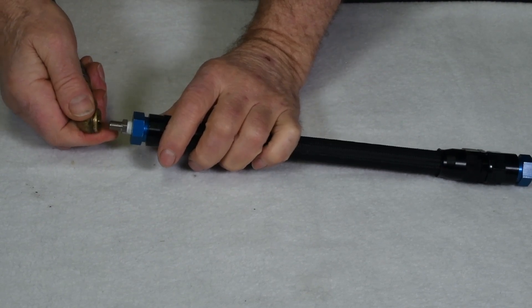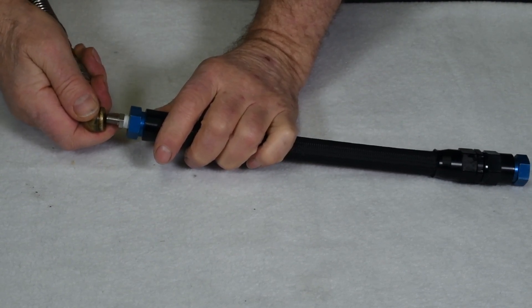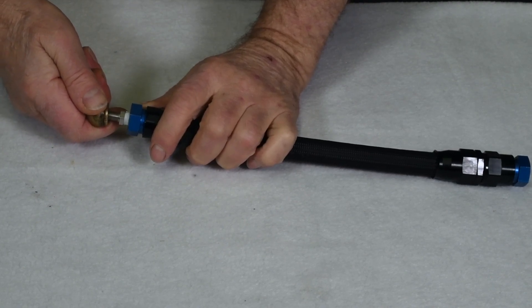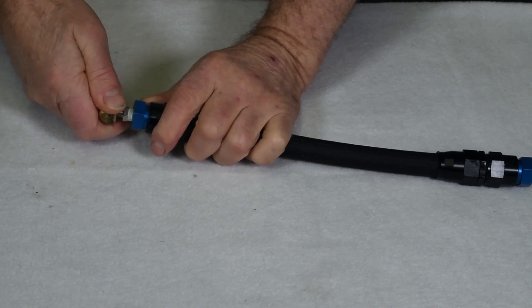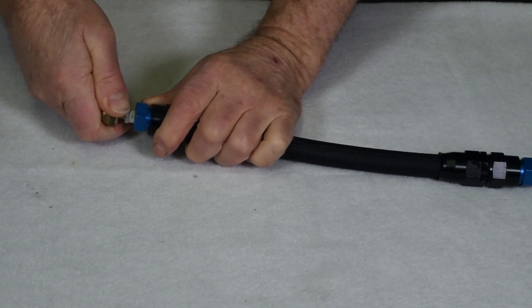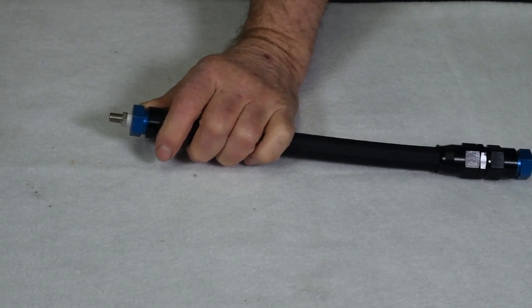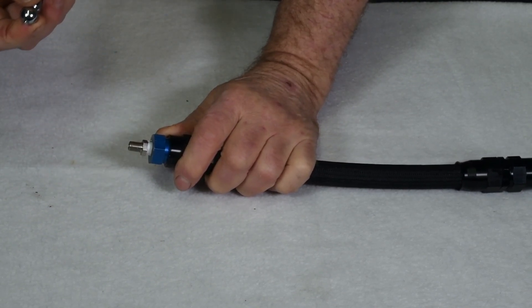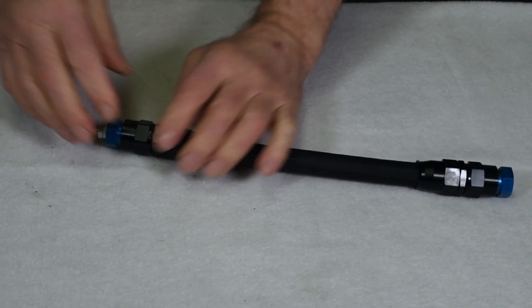You're ready to air it up. Don't need a lot of pressure. I typically use twice the operating pressure that I anticipate. This is fuel line, so probably don't need much more than 20 pounds. 26 pounds should be sufficient.